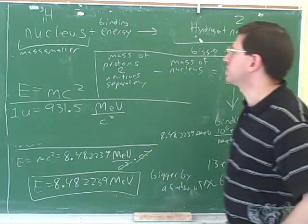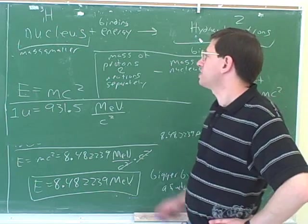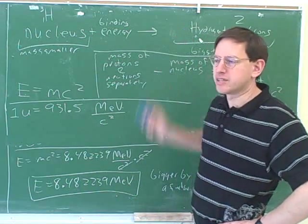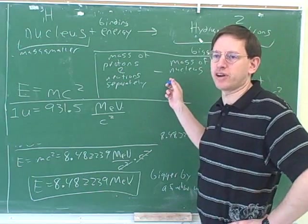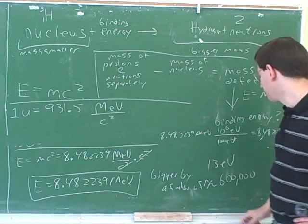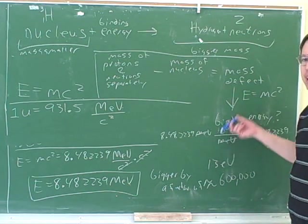So you might see these terms used. The binding energy for the nucleus is how much energy it would take to separate the components of the nucleus. The binding energy for an electron is how much energy it takes to remove an electron. And that's going to be much smaller here. And they also say to explain.